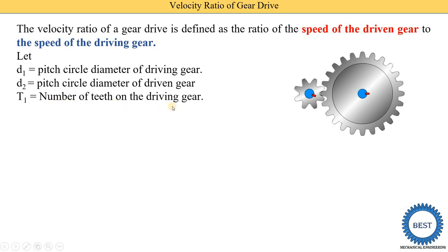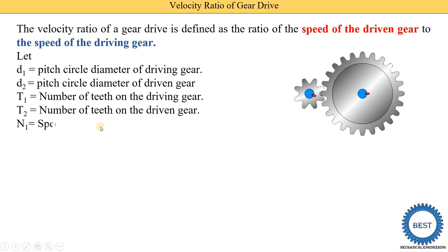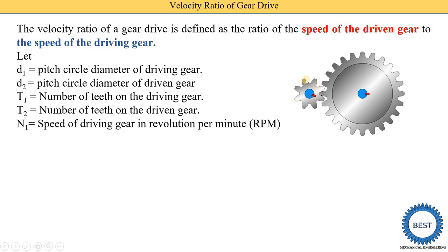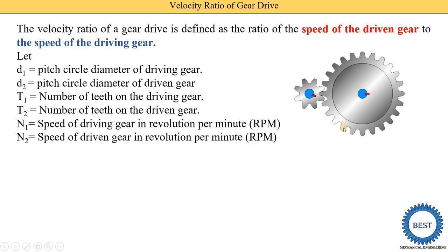T1 is the number of teeth on the driving gear. In this diagram, the driving gear has 8 teeth, so T1 equals 8. T2 is the number of teeth on the driven gear — here there are 24 teeth, so T2 equals 24. N1 is the speed of the driving gear in RPM — how many times it rotates in one minute. N2 is the speed of the driven gear in RPM.